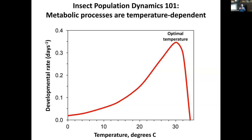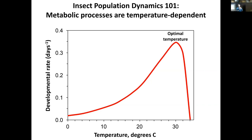Insects have an optimal temperature where metabolic processes are maximized. In temperate systems, that's about 28 to 30 degrees Centigrade — roughly 82 to 85 degrees Fahrenheit. Below the optimal temperature, there's a wide range of suboptimal temperatures. The range insects can tolerate above the optimal temperature tends to be fairly restrictive. So if you're already living at your optimal temperature, getting warmer is a bad thing. If you're below it, getting warmer may actually be beneficial.